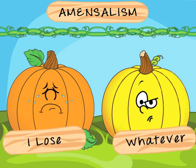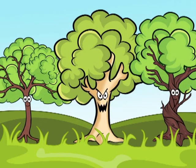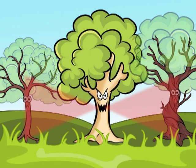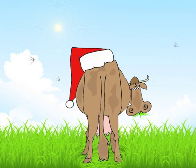This is a type of relationship where one organism is harmed and the other is unaffected. This typically happens when the product of one organism has a negative effect on another organism. For example, species which secrete a chemical compound as part of their metabolism can be detrimental to surrounding organisms. Take the black walnut tree — it secretes a chemical compound as part of its metabolic process that kills some neighboring trees. A more common example is sheep or cattle that create trails when they trample on grasslands, inadvertently killing the grass they graze on.